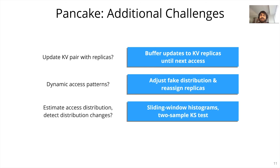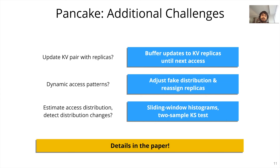Finally, in order to estimate access distributions and detect distribution changes, we employ standard statistical tools such as sliding window histograms and two-sample KS tests respectively. If you're interested in the details of how these techniques are incorporated into Pancake, please take a look at our paper.